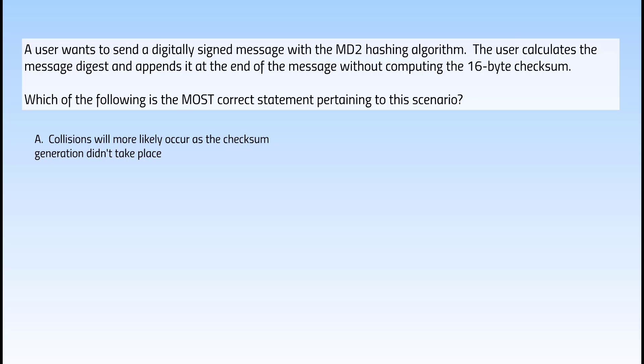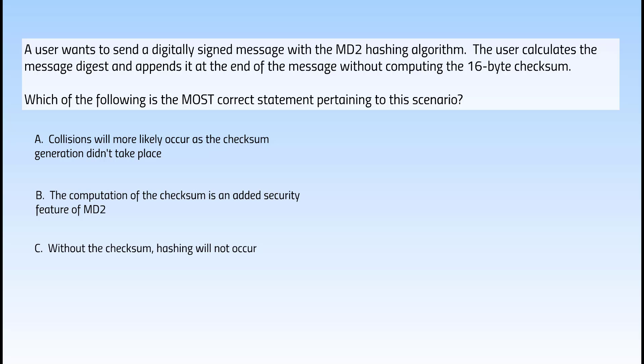A: Collisions will more likely occur as the checksum generation didn't take place. B: The computation of the checksum is an added security feature of MD2. C: Without the checksum, hashing will not occur. D: The speed of the hashing process is significantly increased without the checksum.